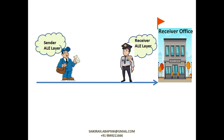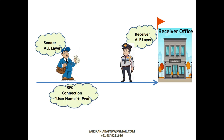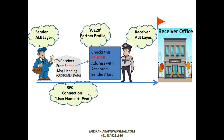If everything is okay, the sender ALE layer goes to the receiver ALE layer. Our intention is to drop the letter — that is the envelope — to the receiver office. He goes to the receiver office, but in front of the receiver office there is a receiver ALE layer. The path that the sender layer takes is already maintained by us in an RFC connection, which has the destination address (the receiver address), plus the username and password, that we need to maintain in our sender layer. Then only will he know the exact receiver address, and he delivers the letter to the security of the receiver office.